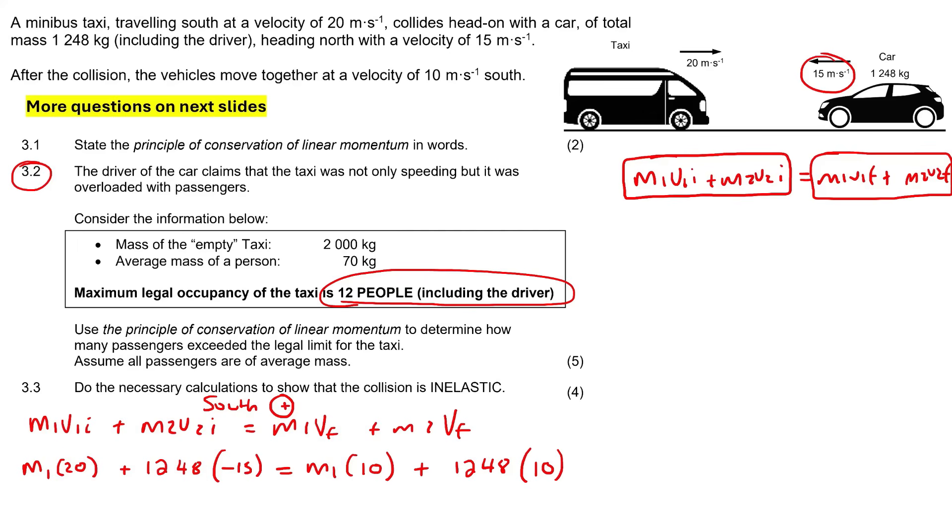So what we can do now is just simplify a little bit. So 20M1, then this is going to become a negative 1248 times 15, it's 18,720 equals to 10M1 plus 12,480. I'm going to bring this over to this side, so we're going to end up with 20 minus 10, which is just going to be 10. And then I'm going to take the 18,720 over to the other side, and that's going to give us 31,200. Then to get M1 alone, we're going to divide by 10 and we're going to get 3,120 kilograms.